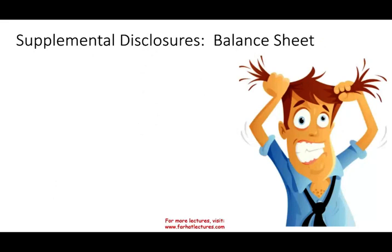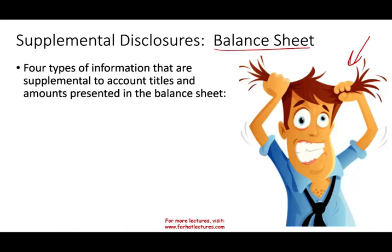We're going to be discussing supplemental disclosure, specifically the balance sheet supplemental disclosure. This picture reminds us that it is not an easy task for the company — what to disclose, what not to disclose, how much to disclose, and how much it's going to cost to collect that information. Simply put, there are four types of information that are supplemental to account titles and amounts. When we prepare the balance sheet, we might show account receivable at five million, long-term investment at 6.5 million, and inventory at 3.6 million — but those titles and amounts are not good enough by themselves; we need to disclose more.